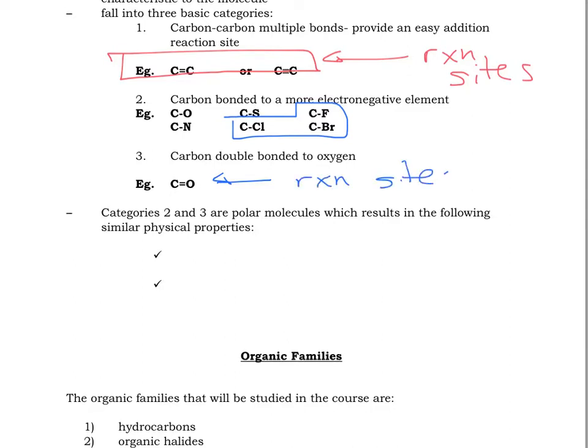Anytime you have lots of electrons in an area in an organic molecule, either with the double and triple bonds in just carbon-carbons, or the carbon double bonded to an oxygen, you've got a good reaction site.